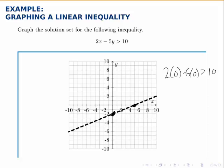2 times 0 is 0, minus 5 times 0 is still 0, but 0 is greater than 10 is a false statement, so the point (0, 0) does not satisfy the inequality. Therefore, the side that I'll shade is the other side, the side that doesn't contain (0, 0).